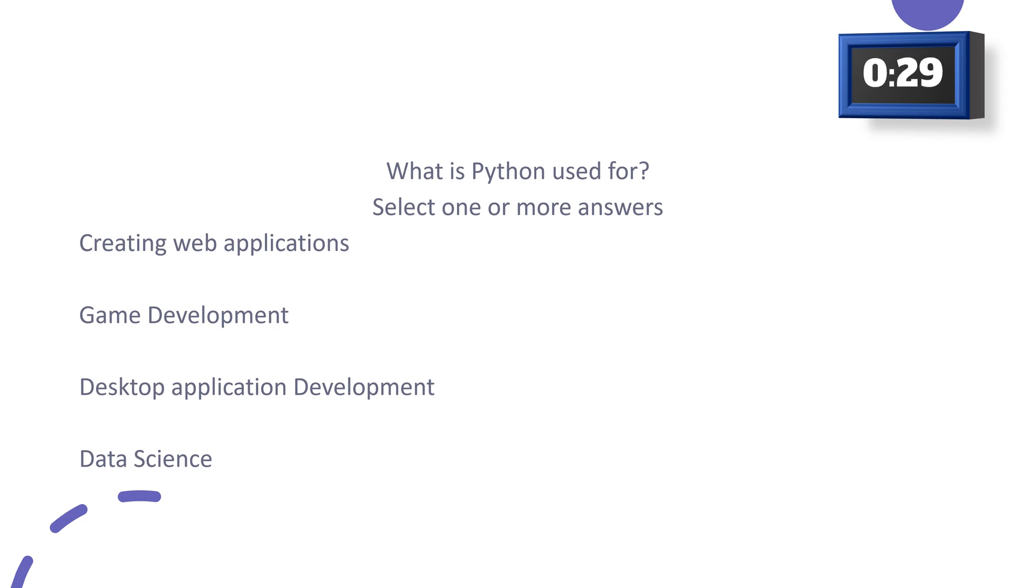Our second question is What is Python used for? There are more than one answer. For creating web applications, game development, desktop application development or data science.